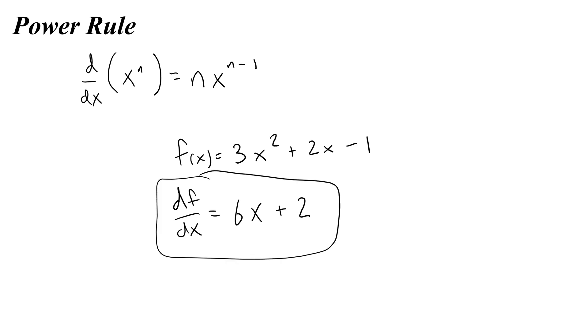If you ever forget the power rule, it is on your AP Physics C equation sheet, which is really nice. Next is the chain rule. The chain rule is kind of interesting, and it has some very grand applications in calculus, but on the AP Physics test it's really only used for a couple of things. It's written like this.